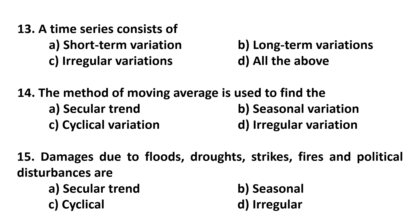Question number 15. Floods, droughts, strikes, fires, and political disturbances are examples of which type of variation in a time series? Options: secular trend, seasonal, cyclical, or irregular variation.